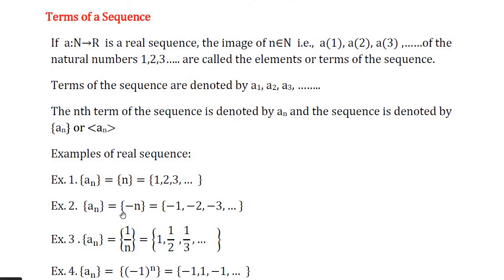Second example: aₙ = −n. The nth term is −n. Putting n = 1, 2, 3, and so on gives the sequence −1, −2, −3, and so on. Similarly, aₙ = 1/n. The nth term is 1/n. Putting n = 1 gives 1; n = 2 gives 1/2; n = 3 gives 1/3, and so on. In this way we can generate the sequence.